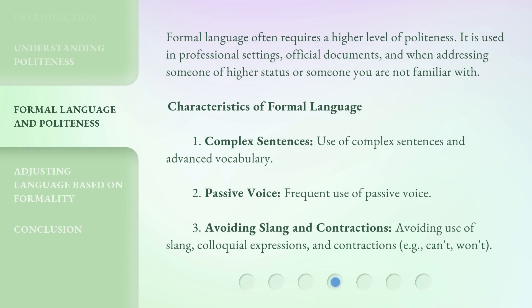Formal language often requires a higher level of politeness. It is used in professional settings, official documents, and when addressing someone of higher status or someone you are not familiar with. Characteristics of formal language include: use of complex sentences and advanced vocabulary; frequent use of passive voice; and avoiding use of slang, colloquial expressions, and contractions, such as 'can't' and 'won't'.